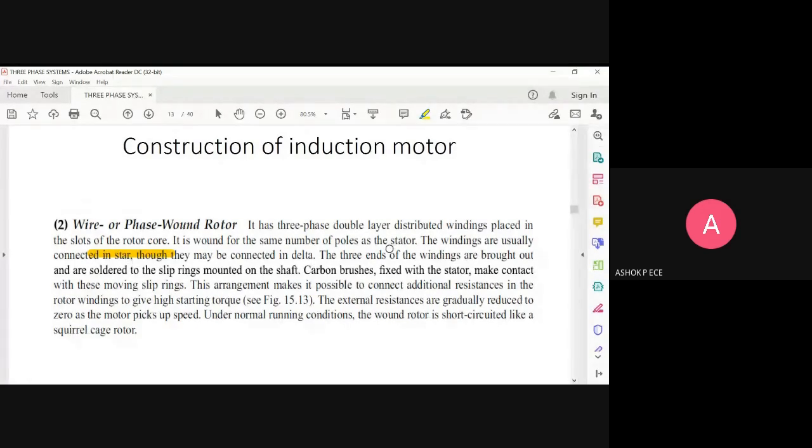In a star connection, the ends of the windings are connected to a common point mounted on the shaft. Carbon brushes make contact with the slip rings, which increases the resistance. This type of rotor will have a very heavy starting torque because the resistance is high. The current is less, so the motor runs at maximum speed.